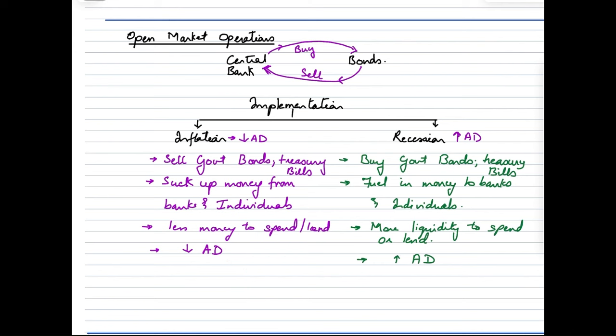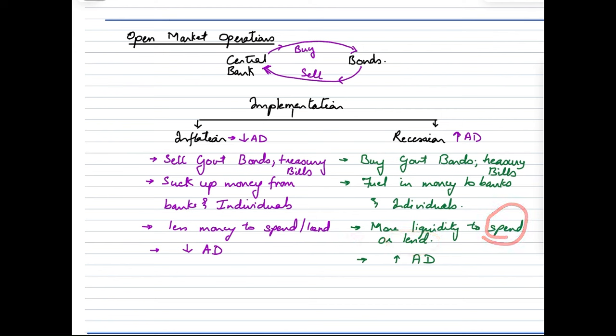In a recession scenario, the agenda is to increase aggregate demand due to the slowdown, so the central bank will buy bonds from the banks. When the central bank buys bonds and treasury bills from commercial banks, it fuels more liquidity — more money available with banks and individuals. With more liquidity, banks can lend more and individuals and businesses can spend more, thereby increasing aggregate demand.